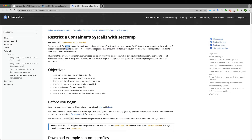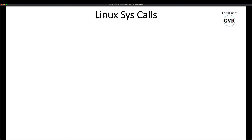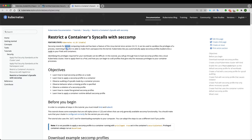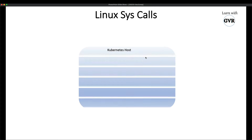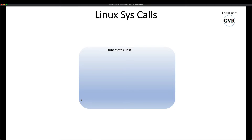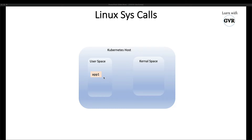Looking at the official documentation on container syscalls: every Linux machine, or host in Kubernetes terms, has hardware like CPU and memory. On top of that is the kernel space, and above that is the user space where applications like Node.js, Python, Golang, or shell scripts are deployed. Whenever these applications execute, they internally make syscalls.